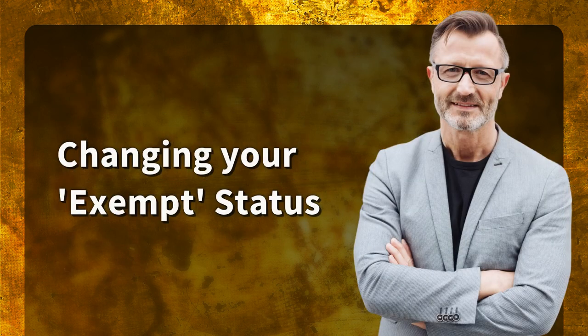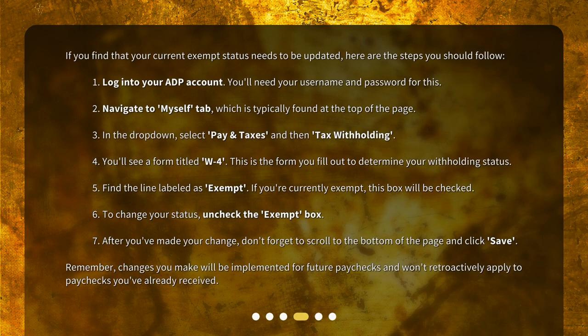Changing your exempt status. If you find that your current exempt status needs to be updated, here are the steps you should follow. Step 1: Log into your ADP account. You'll need your username and password for this. Step 2: Navigate to the Myself tab, which is typically found at the top of the page. Step 3: In the dropdown, select Pay and Taxes, and then Tax Withholding.